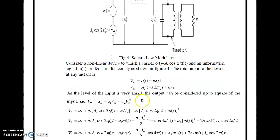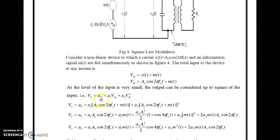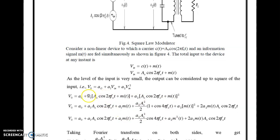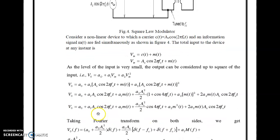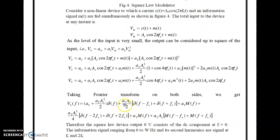As the level of the input is very small, the output can be considered up to the square values: V0 = A0 + A1·Vin + A2·Vin². Substituting VIN = Ac·cos(2πfc·t) + m(t) and expanding these equations, we get the expanded expression. Taking the Fourier transform of this gives: A0 + A1·Ac·cos(2πfc·t) and the corresponding spectral components.